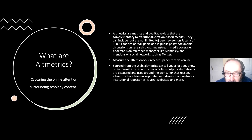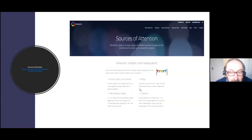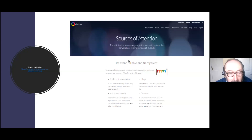Altmetrics measure the attention your research paper receives online, sourced from the web. They tell you how often journal articles and other scholarly outputs like datasets are discussed and used around the world. For that reason, they've been incorporated into researchers' websites, institutional repositories, and journal websites. For example, they'll be included in the Maynooth University archive, in the Scopus database, and a number of different platforms.